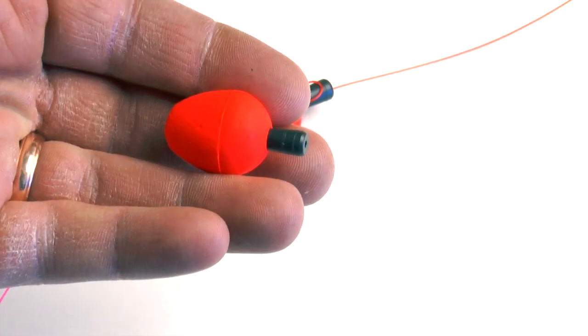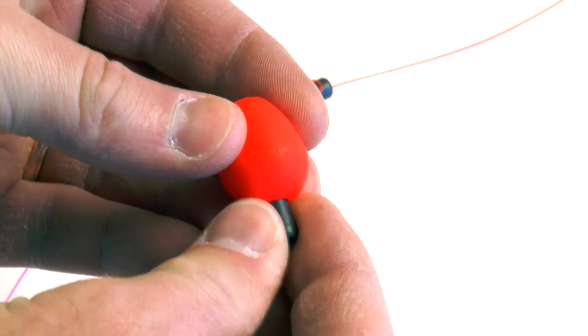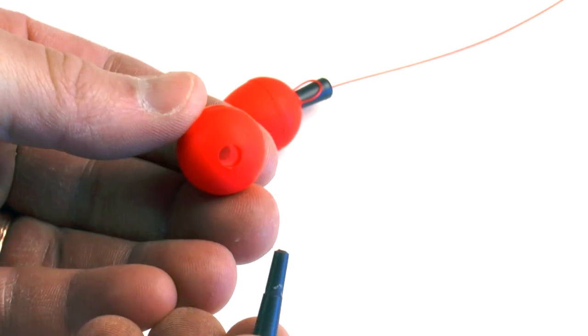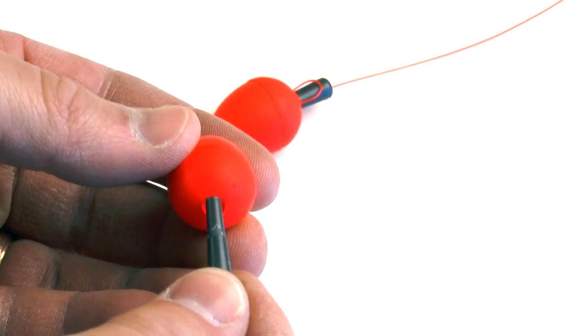The Stillwater Indicator, also known as the Slip Strike Indicator, is an indicator that can break free and slide on your leader. This allows you to fish deep chronomid rigs in stillwaters.